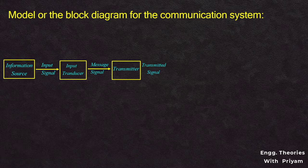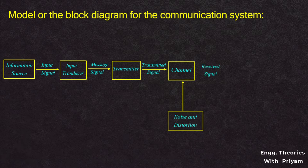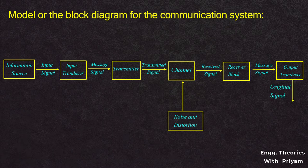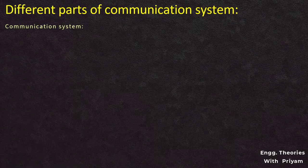The output signal from the transmitter is given to the channel so that it can travel to the receiver. When the signal is traveling through the channel, it faces noise and distortion. The receiver block receives the signal and recovers the original message signal from the distorted signal, finally giving it as input to the output transducer. The output transducer converts the output signal from the receiver back to the original signal, which is then used by the people or any other user of information. Basically, the communication system can be divided into three sections: sender section, channel, and receiver section.